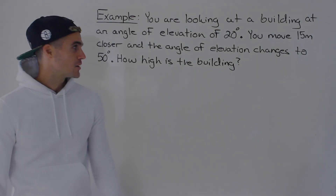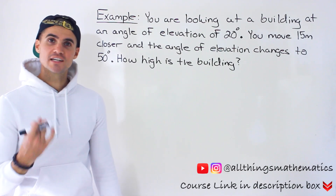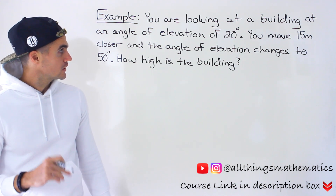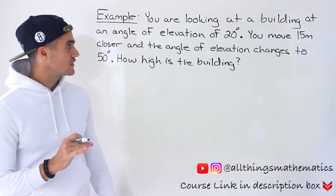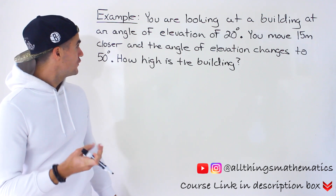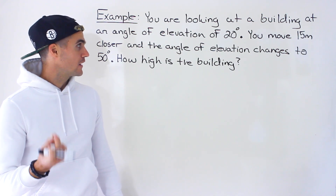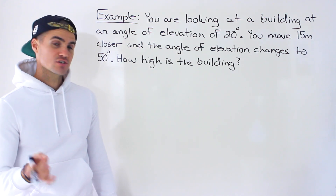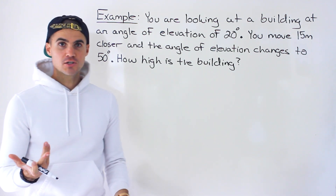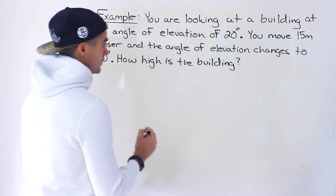Welcome back everyone, Patrick here. Moving on to another word problem dealing with trigonometry with right angle triangles. You are looking at a building at an angle of elevation of 20 degrees. You move 15 meters closer to the building and the angle of elevation changes to 50 degrees. From that information we have to figure out how high the building is.